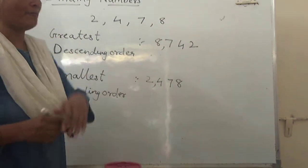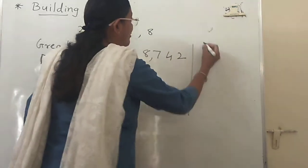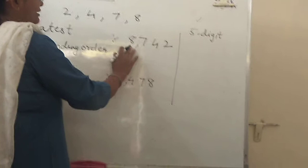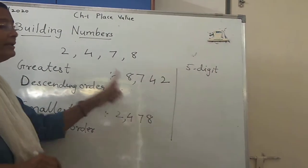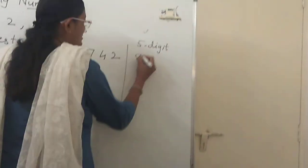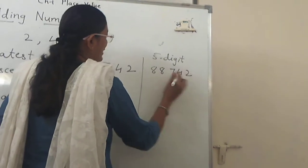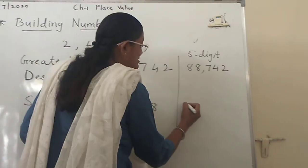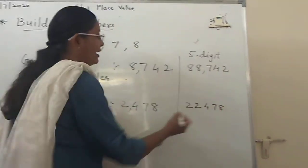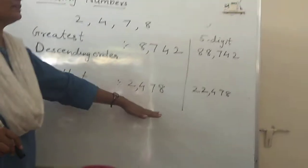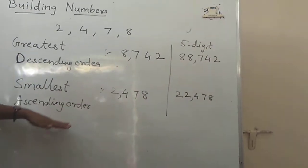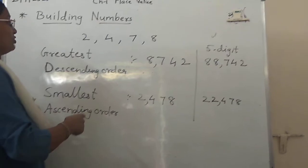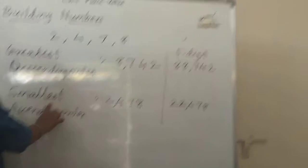Both 8742 and 2478 are 4-digit numbers. If you are asked to build a 5-digit number using these 4 digits, you have to repeat the greatest digit one more time. So 8, 8, 7, 4, 2 — that is 88742, a 5-digit number. When building the smallest 5-digit number, you repeat the smallest digit: 2, 2, 4, 7, 8 — that is 22478. In the greatest number, repeat the greatest digit; in the smallest number, repeat the smallest digit.